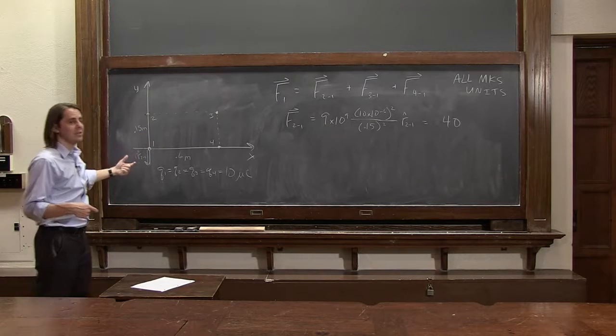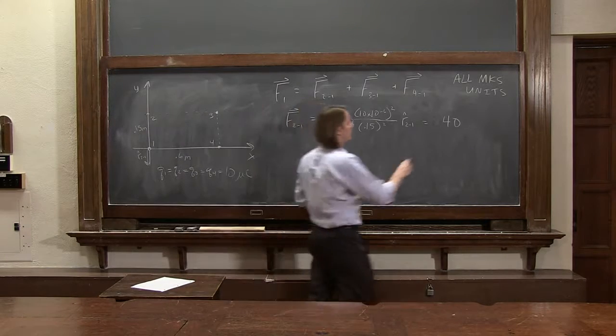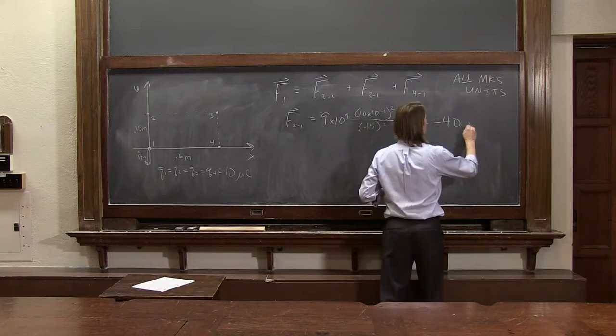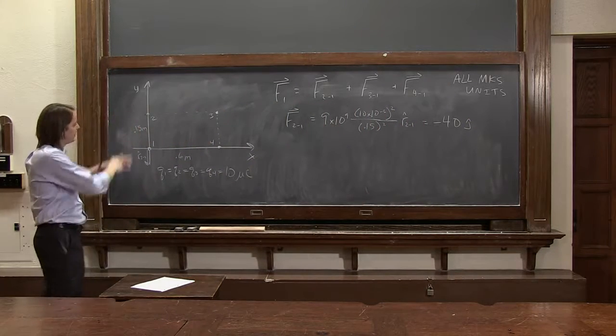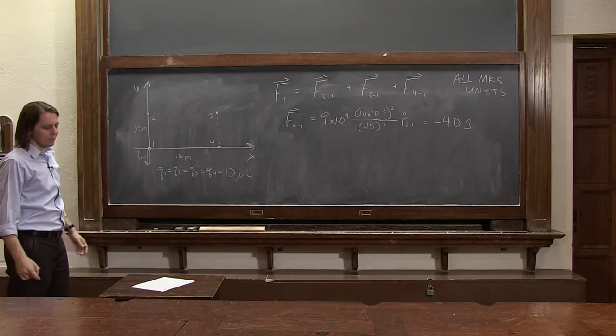But it's down, so it's negative j hat. So just by looking at which way the force goes, we stick that negative there. Minus 40 j hat. So it's a little bit of inspection, just looking at it and thinking about which way everything points.